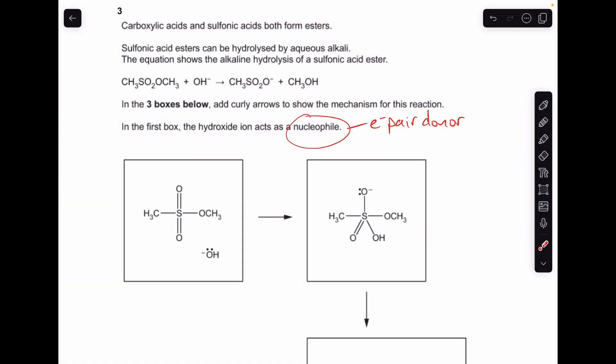Okay, so let's make a start. You'll notice I've highlighted the word nucleophile there. We're told in the first box this hydroxide ion acts as a nucleophile, so it's acting as an electron-pair donor.